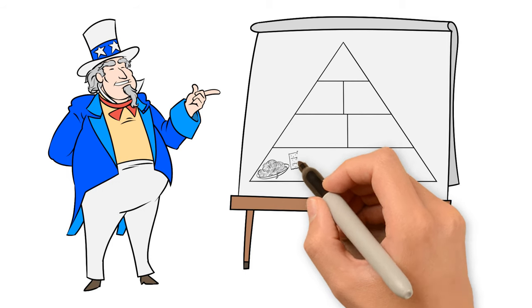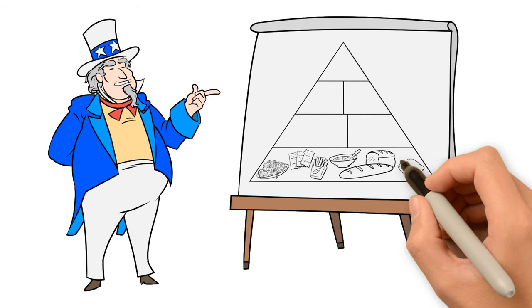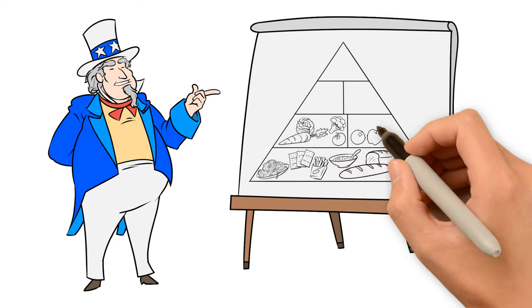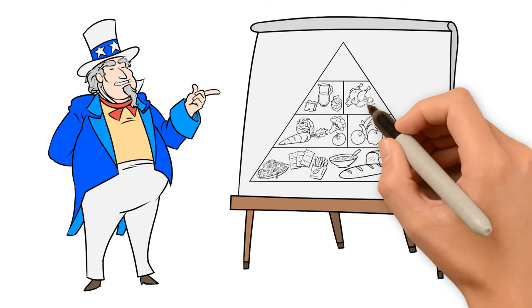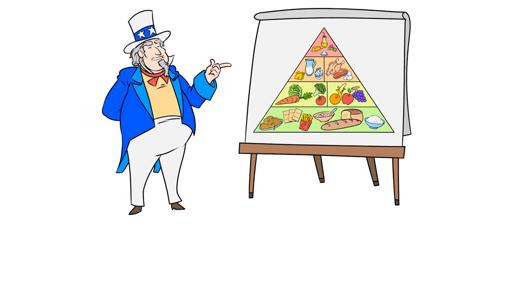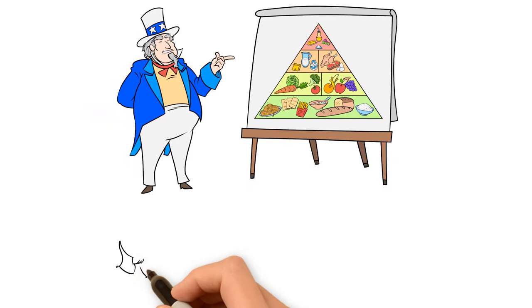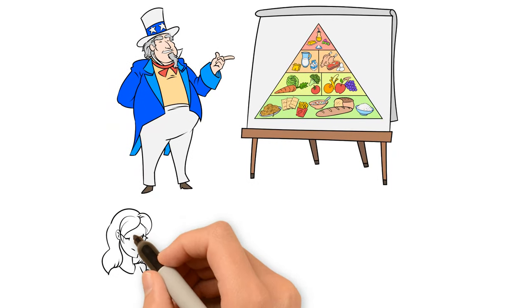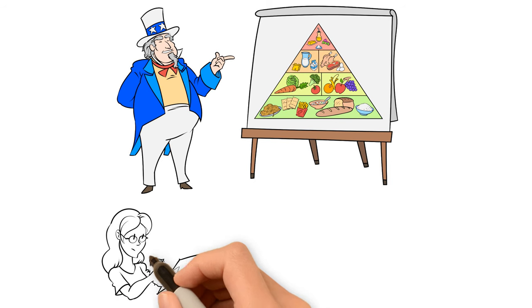That is why in 1992, the Department of Agriculture unveiled what would become the most recognizable image in nutrition, the Food Pyramid. The campaign would cost taxpayers nearly $1 million and is among the most successful government initiatives in history.